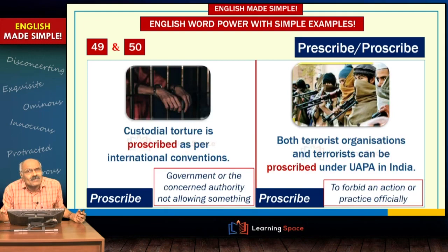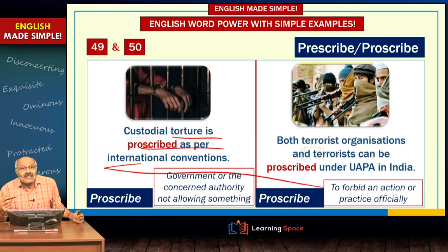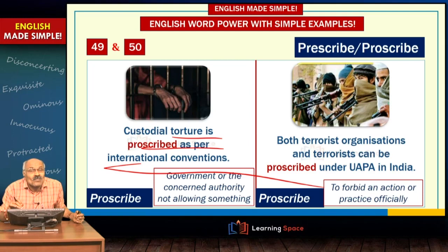'Proscribe' means to officially forbid something through a government order. Terrorist organizations can be proscribed under UAPA — they can be designated as not allowed under the law. Custodial torture is proscribed — meaning something is not allowed as per government authority. So 'prescribe' means to recommend or lay down a rule, while 'proscribe' means to officially ban or prohibit.